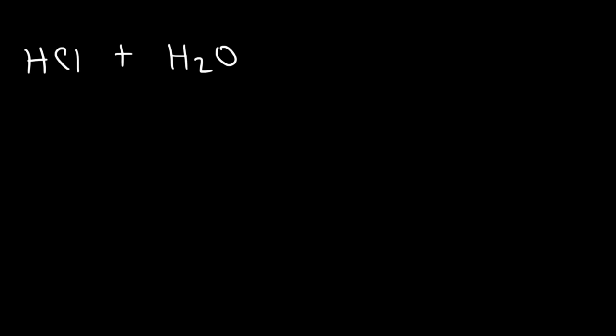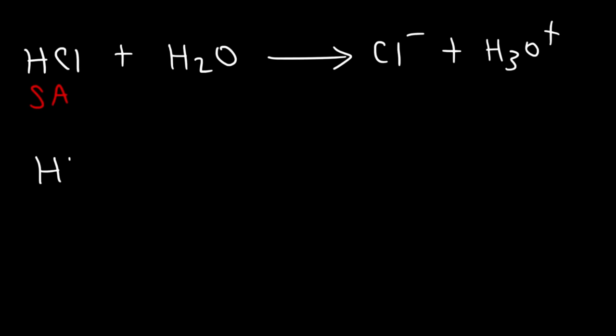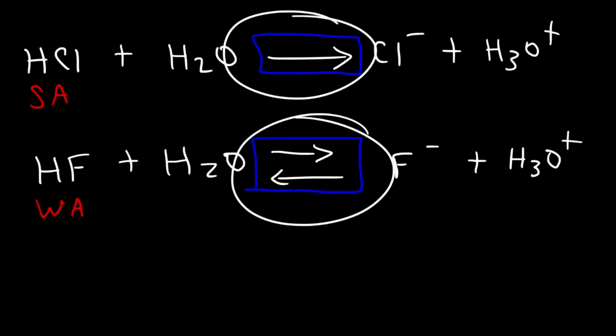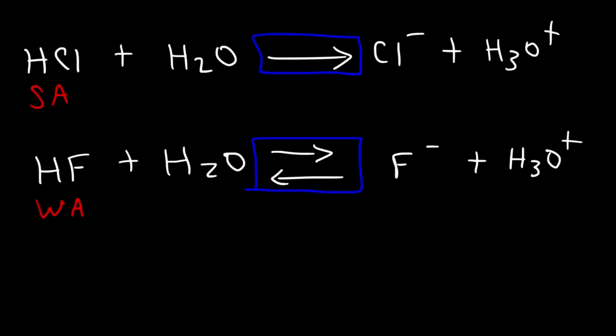For strong acids like HCl reacting with water, because it ionizes completely you write a single arrow. For weak acids reacting with water, the reaction doesn't go to completion — it's reversible — so you use a double arrow. The products are identified the same way in both cases, but weak acids exist in equilibrium, so the double arrow reflects that the reaction is reversible.